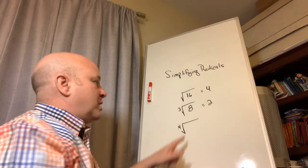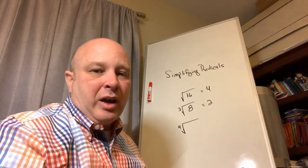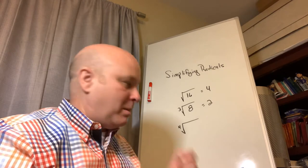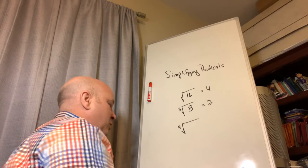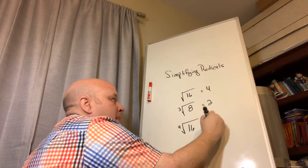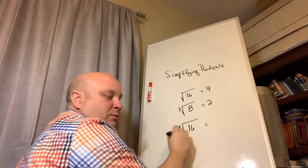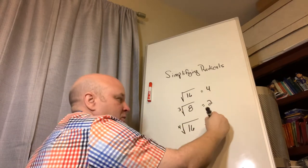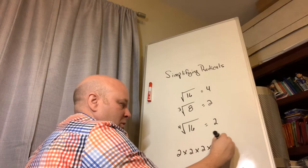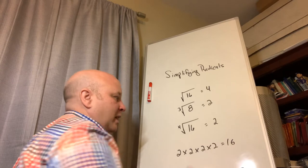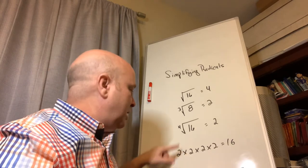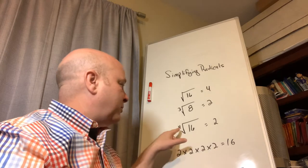The fourth root is the number you multiply by itself four times to get the result. For example, the fourth root of 16 is 2, because 2 times 2 times 2 times 2 equals 16. That's the relationship between your radical — your root — and the exponent.